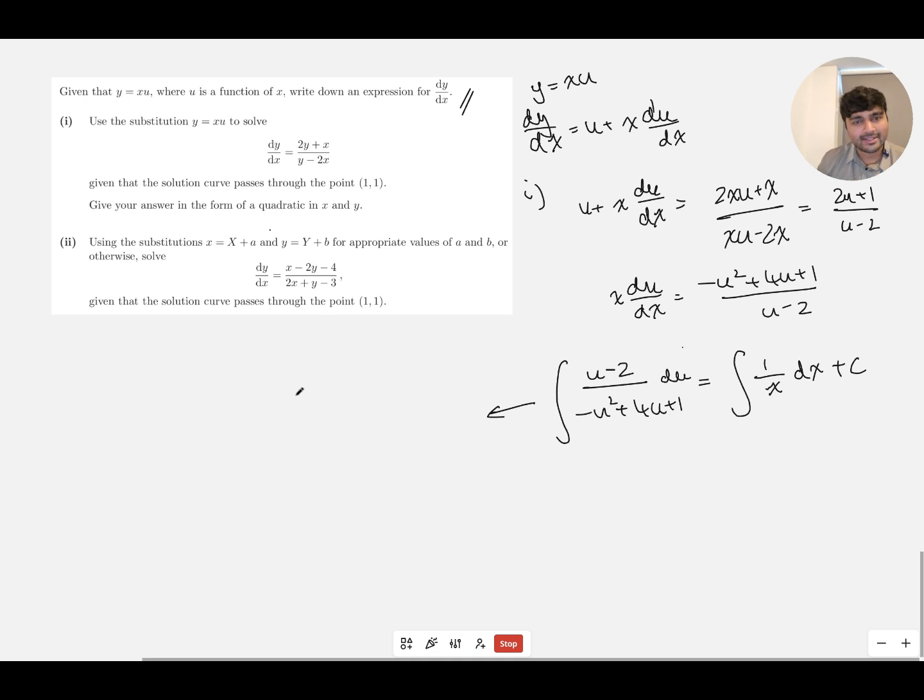And the right-hand side is nice and easy, so I'll start with that. That's just the ln of the absolute value of x plus a constant c. And on the left-hand side, again, this is quite nice, because if I differentiate the denominator here, we're going to get -2u + 4, which is precisely -2 lots of the numerator. And so that tells me that this is using the reverse chain rule. This is going to be -½ times ln of the absolute value of (-u² + 4u + 1).